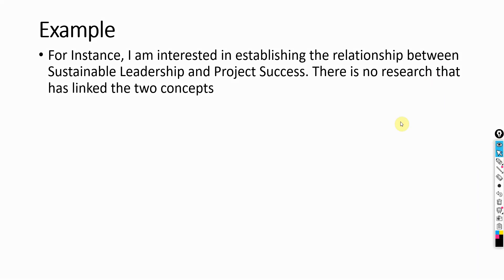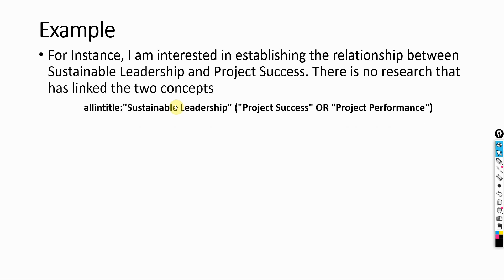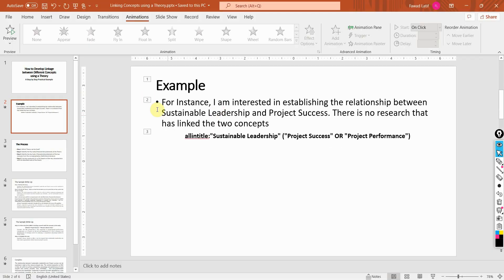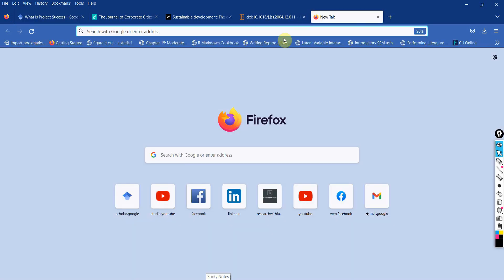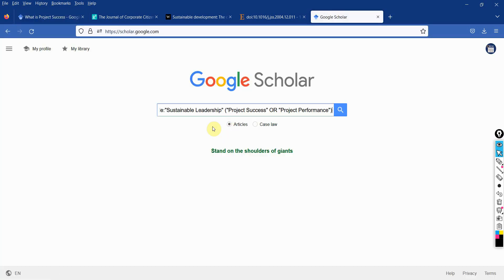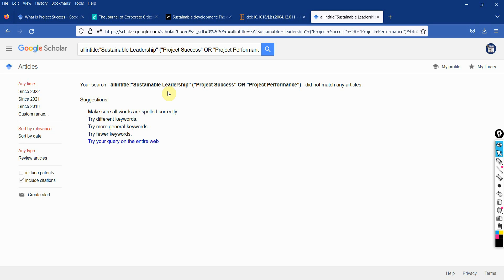How do I know that there is no research that has linked the two concepts? I put this particular text into Google Scholar and could not find any research that has linked the two concepts. I am going to do it in front of you as well — let's go to Google Scholar, enter the text, and there is no research that has linked sustainable leadership with either project success or project performance.